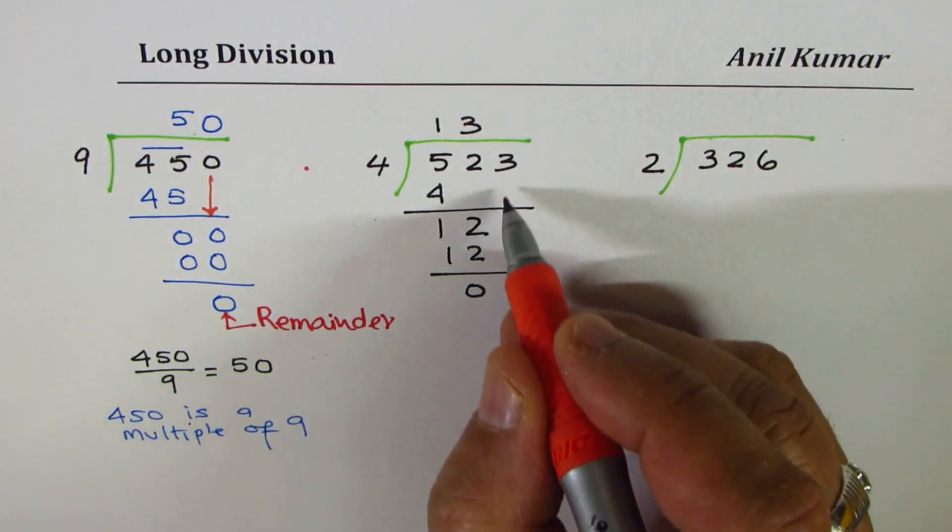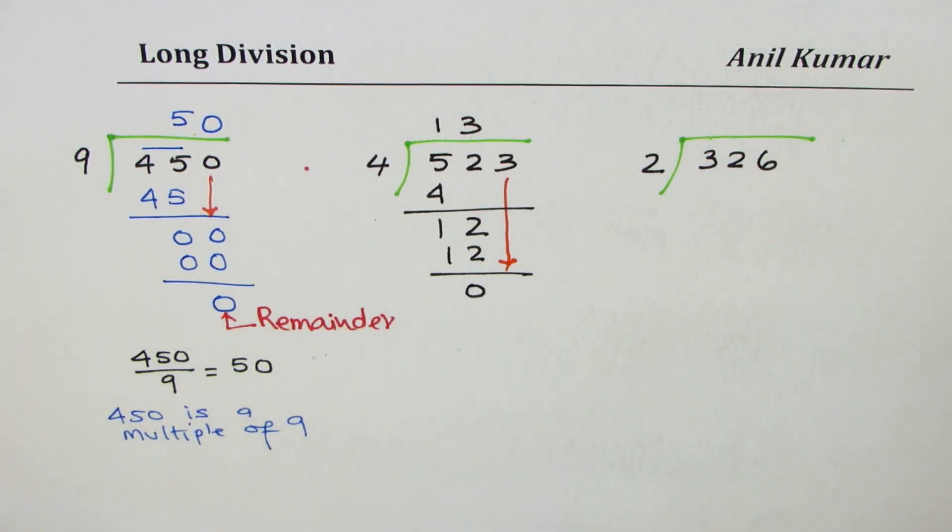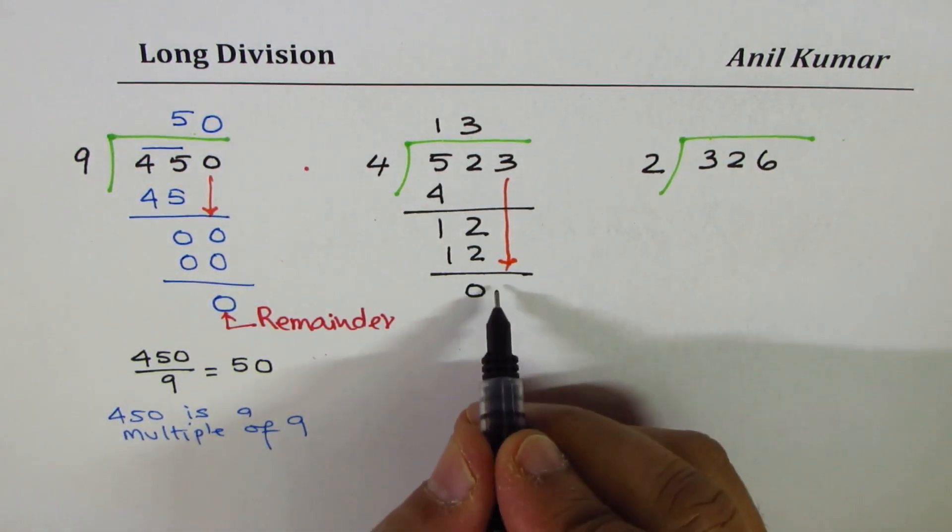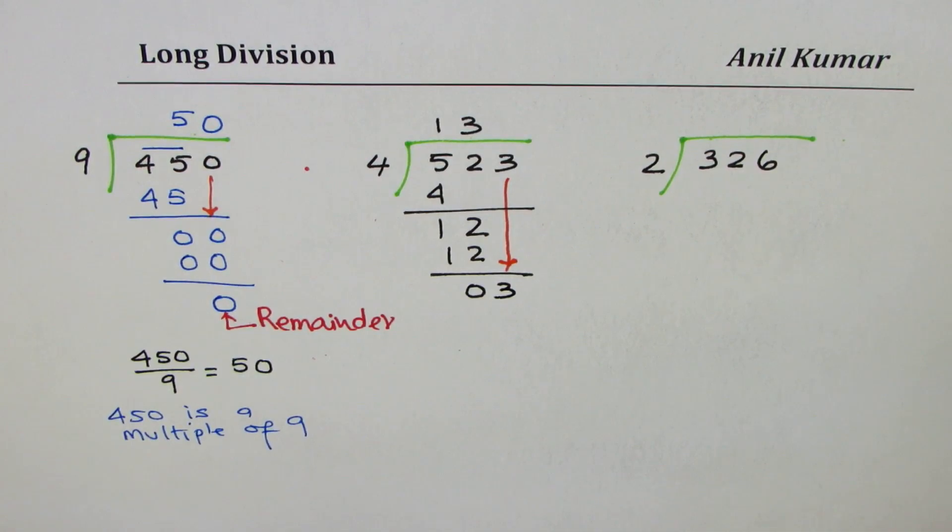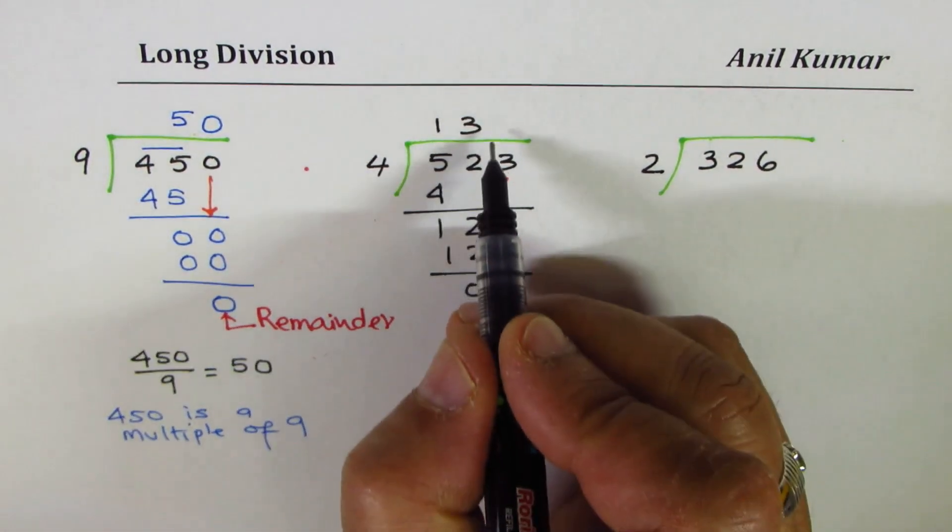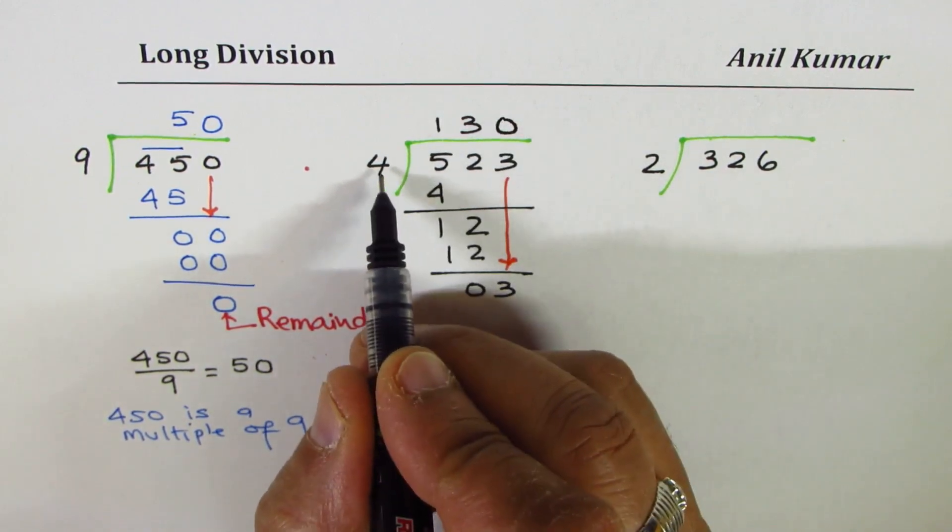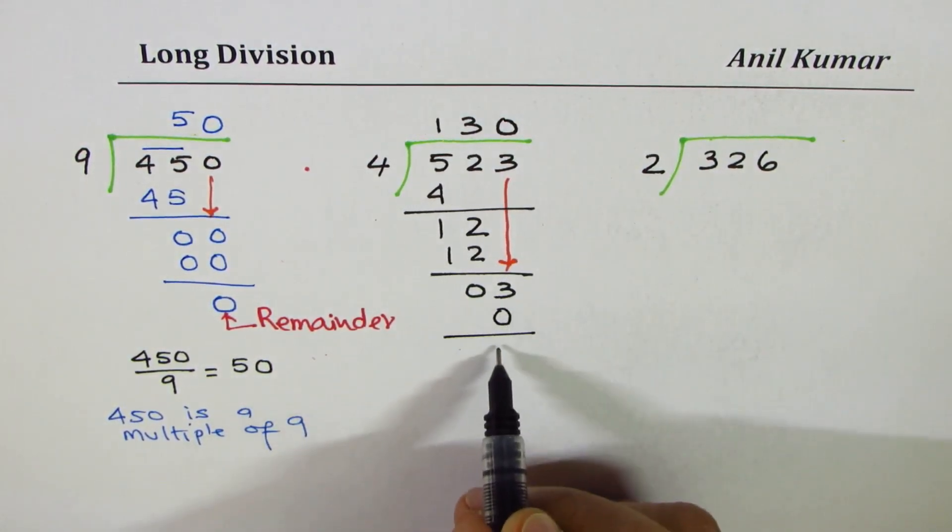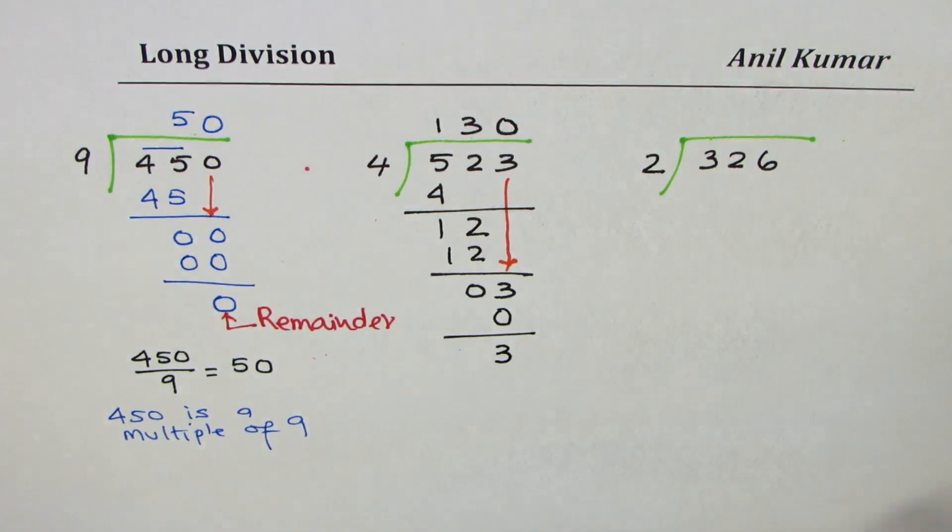If you get a 0, don't stop. We still have one more number to go. We have to bring down this number and divide it further. 4 cannot be divided into 3, 3 is smaller. But you could always write 0 here. 4 times 0 is 0. And now you get remainder of 3. The remainder is 3.